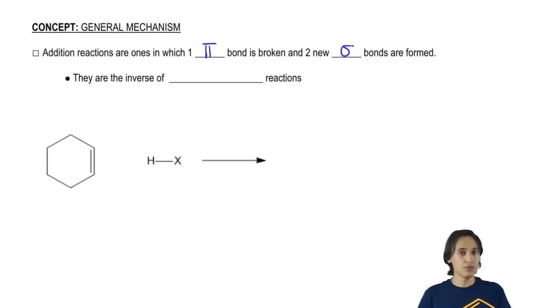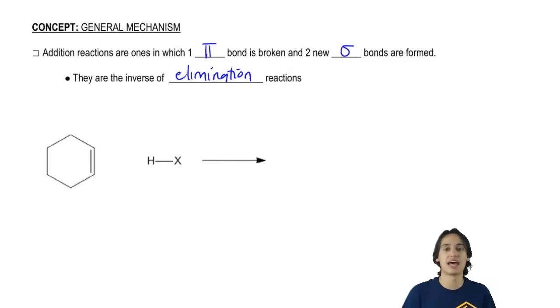Now this is actually going to be the inverse of a reaction that you may have already learned or are about to learn and that's called the elimination reaction. The elimination reaction is actually the exact opposite. All that means is that for an elimination, we would take two sigma bonds and make one pi. But in this case, what we're going to do is take that pi and make two sigma bonds.